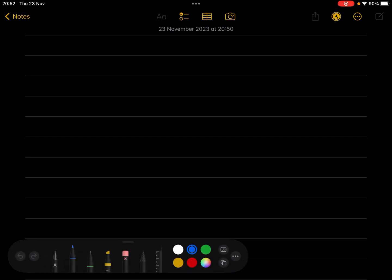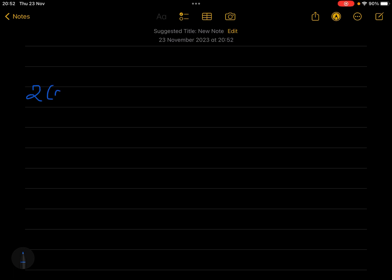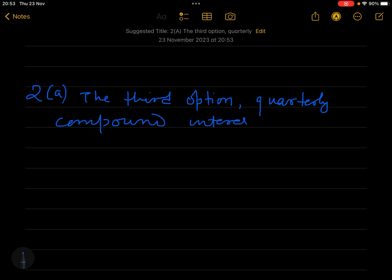Question number 2A: the third option, that is quarterly compound interest, helps BPN to get more interest. Always we have to write the answer in one sentence, not in a line. Now draw a line like this.